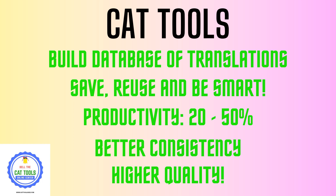The main purpose of a CAT tool is building a database of translation. Let's say I am translating five lakh words per year as a translator. If I use a CAT tool, all my work will get saved in one or more translation memories. So I am building a huge database of translation. The advantage of building a huge database is that I can reuse it and become smarter by working faster.